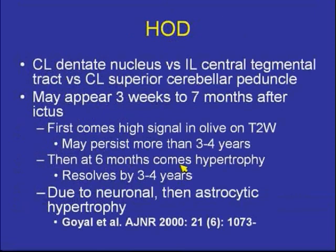Hypertrophic olivary degeneration is an entity associated with the Guillain-Molaret triangle. It is due to a lesion which may affect either the dentate nucleus, the central tegmental tract, the superior cerebellar peduncle, or the red nucleus. It occurs approximately three weeks to seven months after the event that injured those areas, which may include infarction, hematomas, or hemorrhagic contusions.